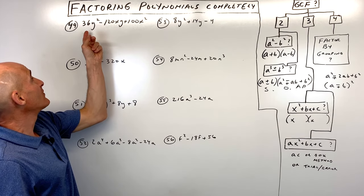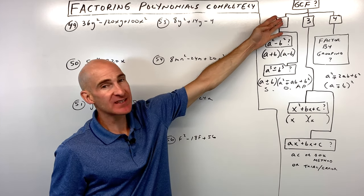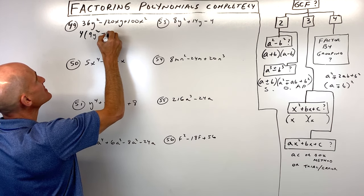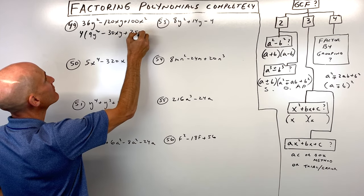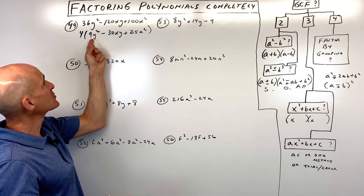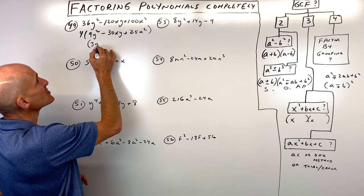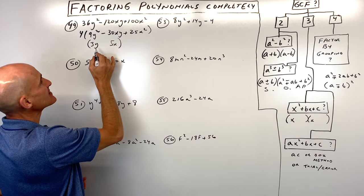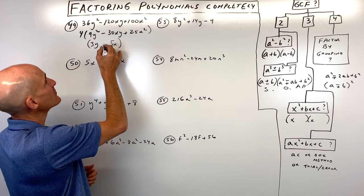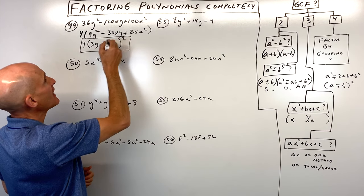Number forty-nine, 36y squared minus 120xy plus 100x squared. First factor out 4 to get 4 times 9y squared minus 30xy plus 25x squared. Now check for a perfect square trinomial: square root of 9y squared is 3y, square root of 25x squared is 5x. Is 3y times 5x doubled equal to 30xy? Yes — 15xy doubled is 30xy. So this is 3y minus 5x quantity squared. Bring down the 4 for the fully factored form.